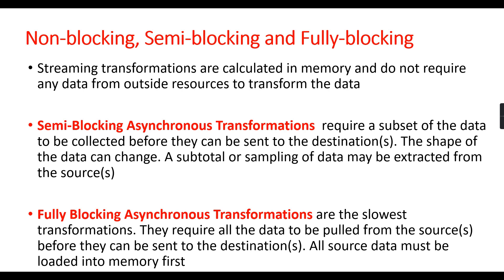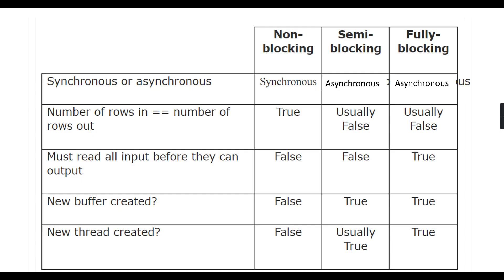The reason for understanding all these classifications is that you need to choose the appropriate transformation and avoid fully blocking transformations whenever possible, because they require all data to be pulled before the transformation occurs. Let's see how we can classify the transformations and then look at what falls under non-blocking, semi-blocking, and fully blocking.